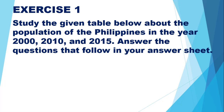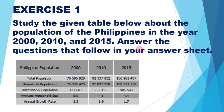Let's start with Exercise number 1. Study the given table about the population of the Philippines in the years 2000, 2010, and 2015, and answer the questions that follow in your answer sheet. The total population of the Philippines in 2000 was 76,506,928; in 2010 it was 92,337,852; and in 2015 it was 100,981,437.